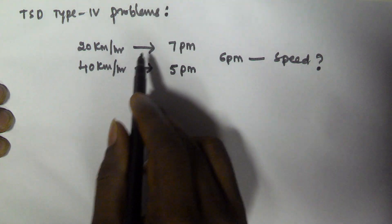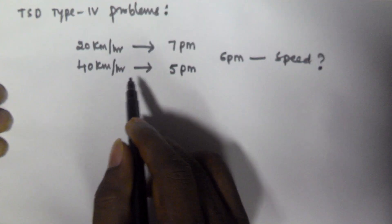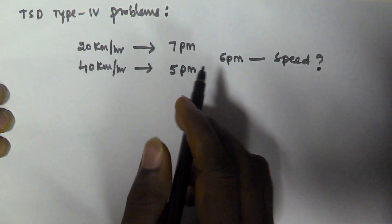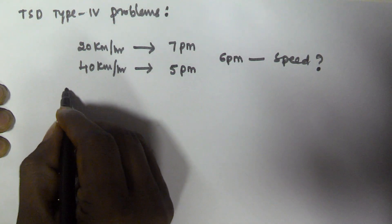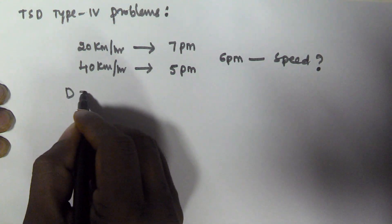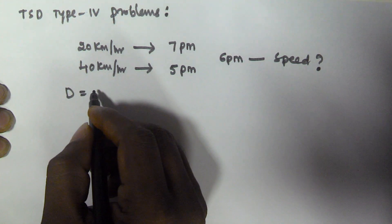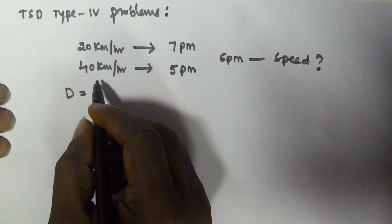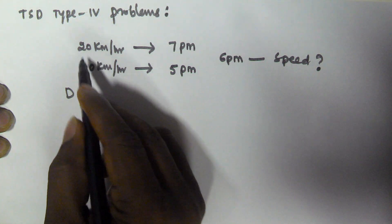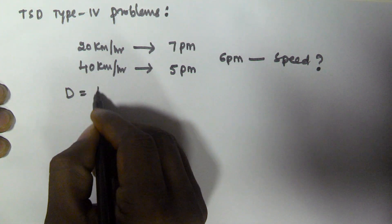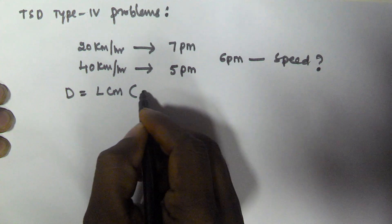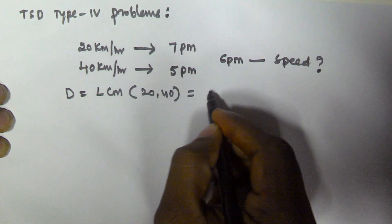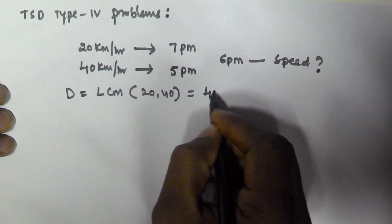In both the days he is travelling from home to office, so in both the cases the distance is constant. Since the distance is constant I can take any value, but I am taking the LCM of both the speeds. So distance is equal to LCM of 20 and 40, which is going to be 40 km.